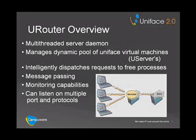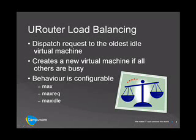The U-Router itself is able to listen on multiple ports and use multiple protocols. In its default configuration, the U-Router will provide a level of load balancing. In this mode, it will dispatch requests to the oldest idle virtual machine. It chooses this algorithm, rather than a round-robin approach, so that the youngest processes get a chance to time out. If it used a round-robin approach, every process would have an equal load and therefore never time out.